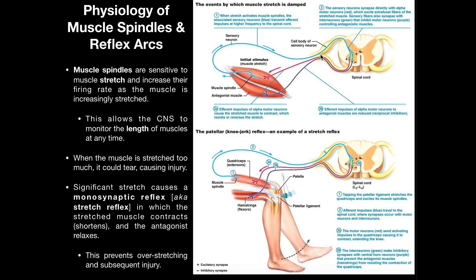With muscle spindles, their major job is to monitor the stretch of skeletal muscles, and this provides two things. One, when we're moving around, it allows our brain to monitor where our limbs are in space by determining the joint angle through how long or stretched the muscle is. But also during exercise, it helps prevent injury — if we stretch the muscle too much we can tear it, so there's an involuntary reflexive contraction to shorten the muscle and prevent too much lengthening. Please make sure to like this video and subscribe to my channel for future videos and notifications. Thank you very much.